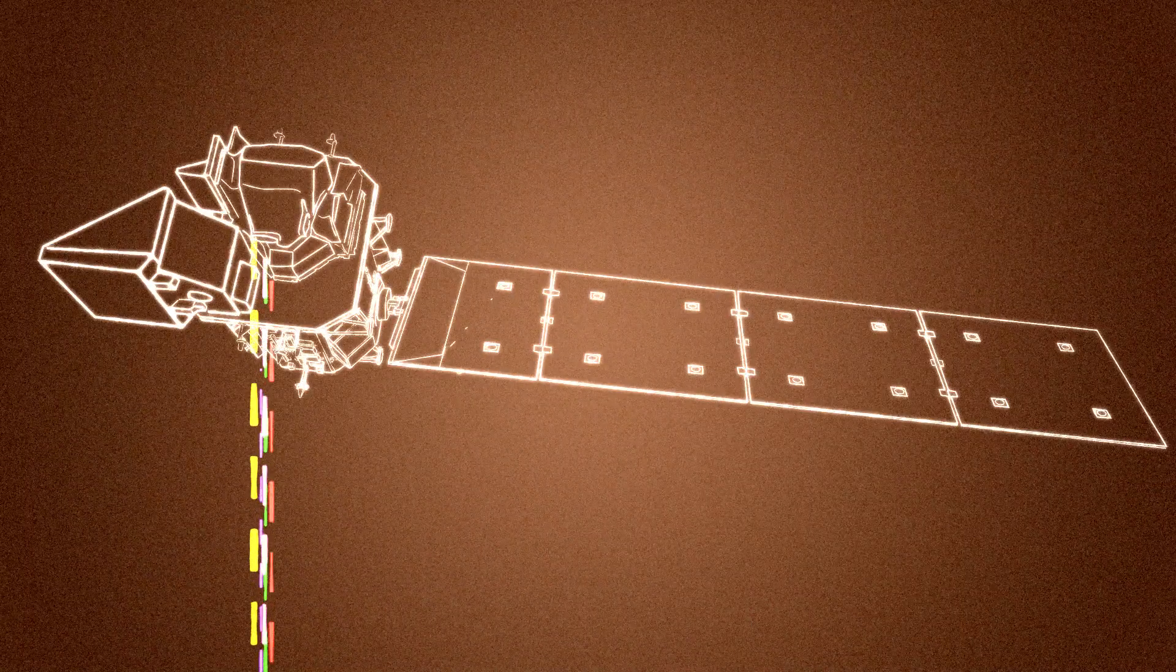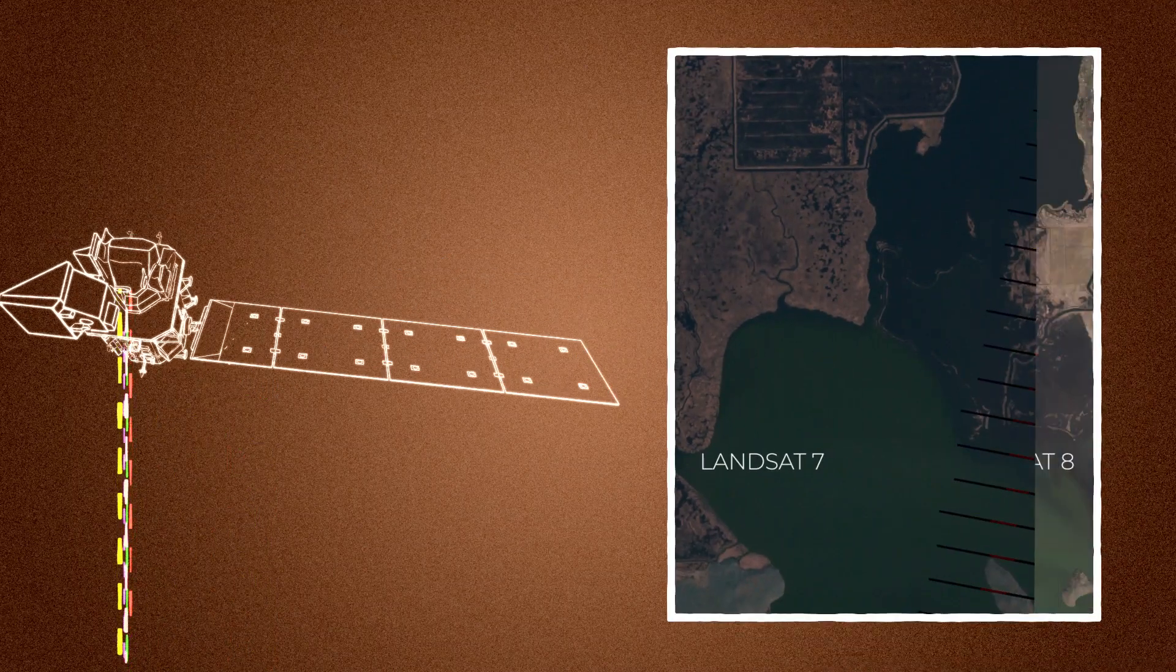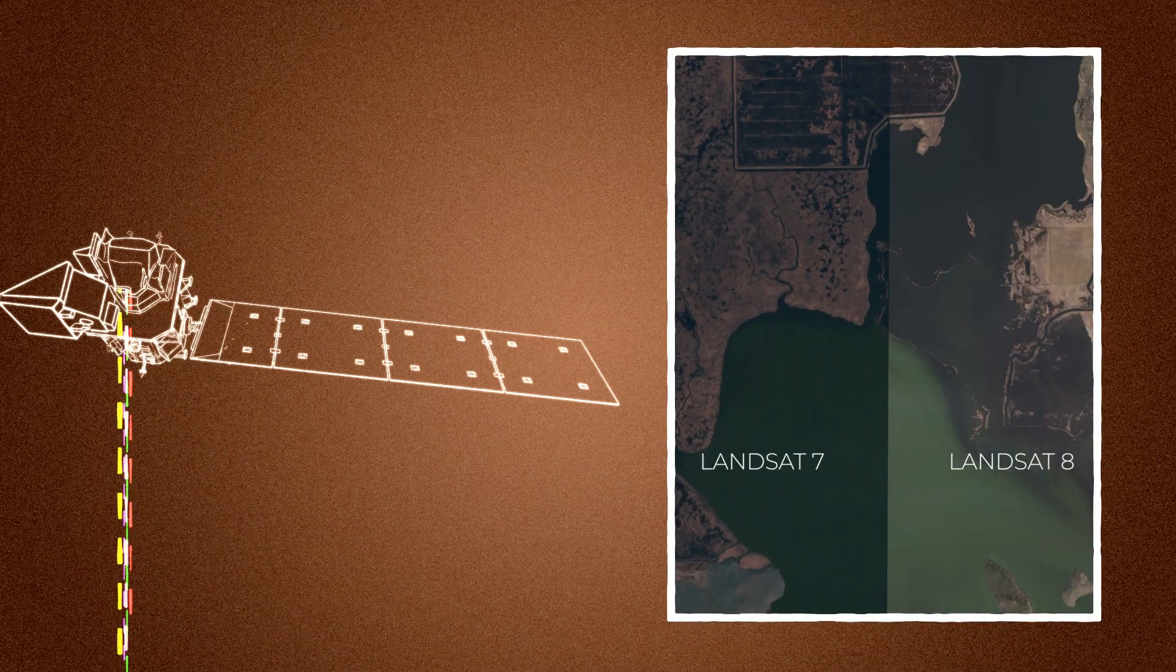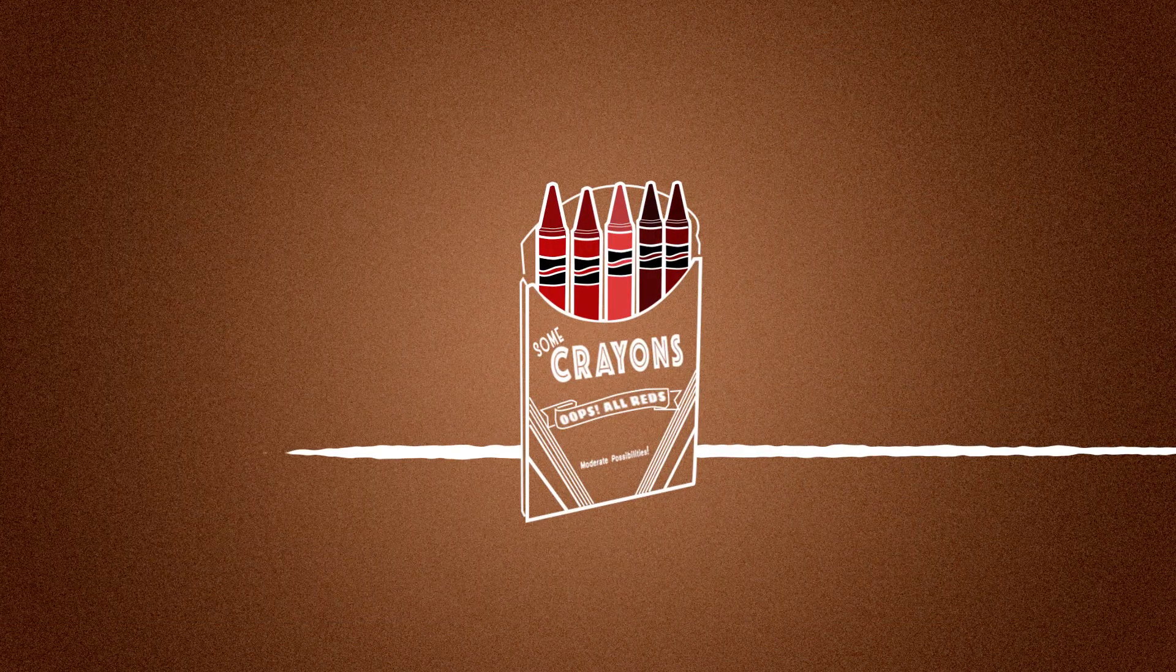Landsat collects light. How intense that light is tells us about what's on the ground. You can think of intensity like shades of a different color.